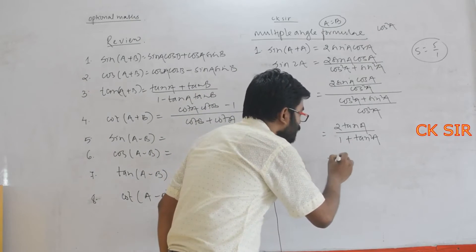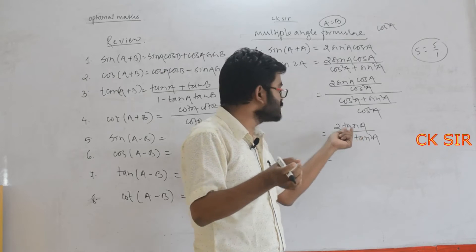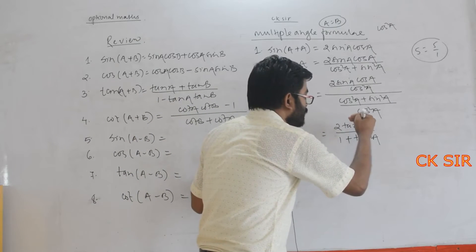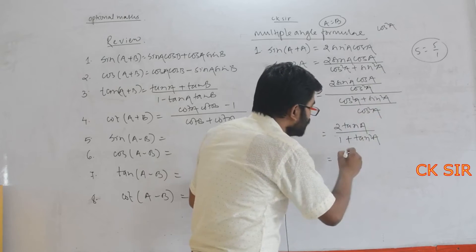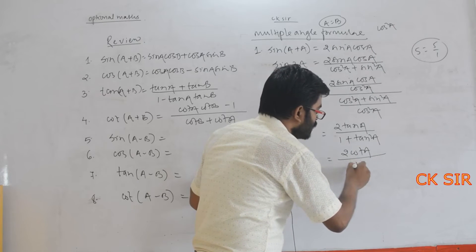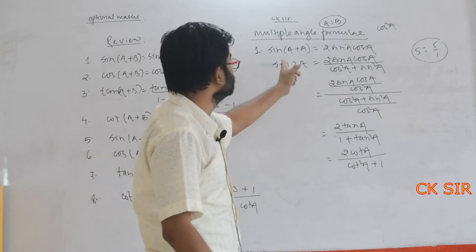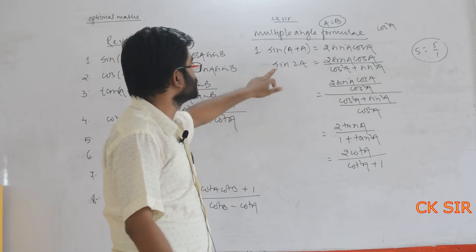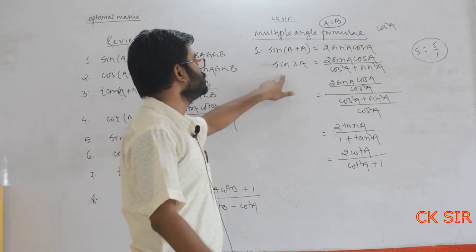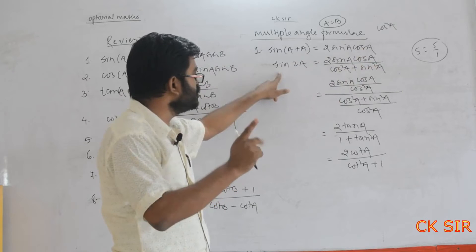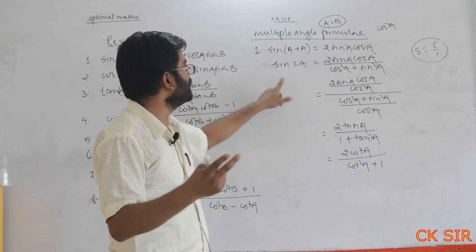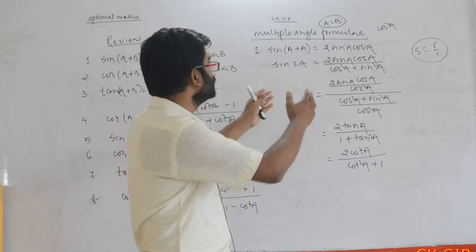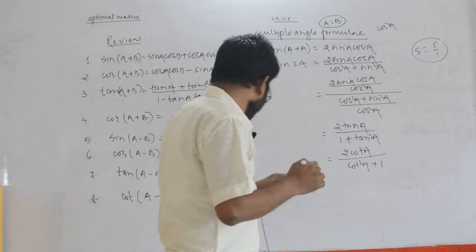In terms of cot A, just convert tan A = 1/cot A in the second formula. You will get: sin 2A = 2 cot A / (cot²A + 1). So for sin 2A we have three formulas today: (1) 2 sin A·cos A, (2) 2 tan A / (1 + tan²A), and (3) 2 cot A / (1 + cot²A). Write all of these in your note copy so it will be easier to study later.